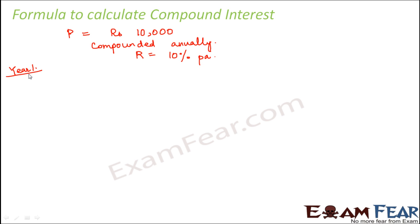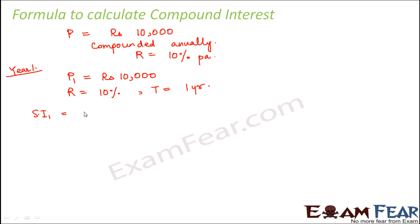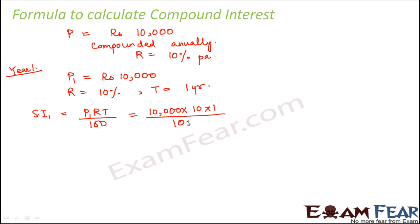Let us follow the process we normally use to calculate compound interest. For the first year, your principal amount would be rupees 10,000, rate of interest would be 10%, and time period is one year. So simple interest would be P × R × T / 100, that is 10,000 × 10 × 1 / 100, which equals 1,000. This would be your simple interest for the first year. Therefore, the amount at the end of the first year would be the principal amount plus the simple interest of the first year.